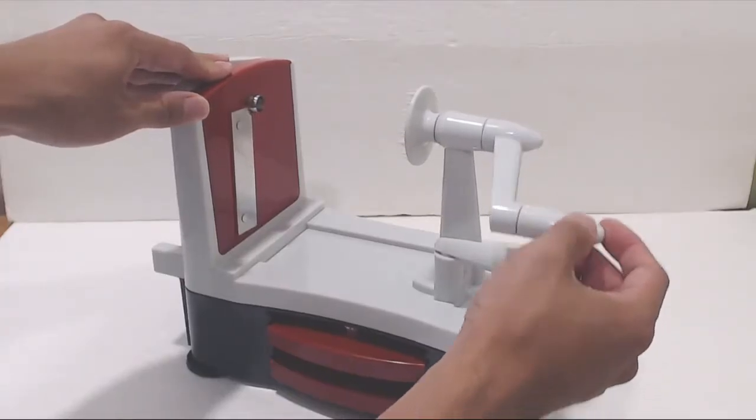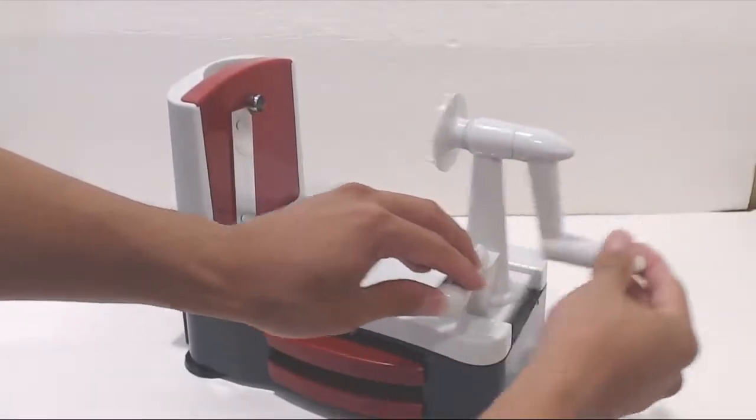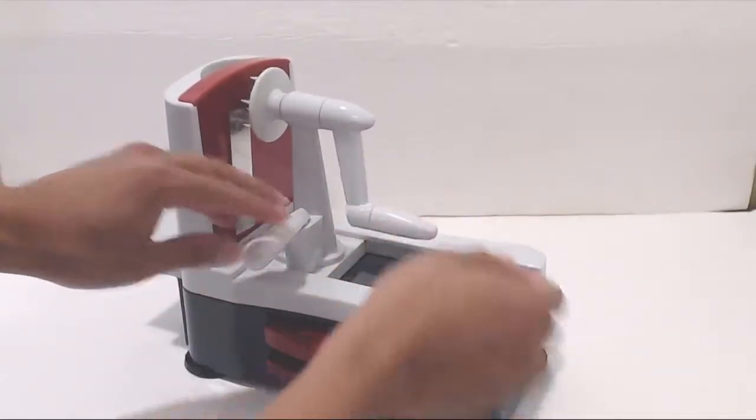The lever next to the handle keeps it from rotating in storage and serves as a leverage point to push the food against the blade. Turn the lever clockwise to allow the handle to rotate freely.